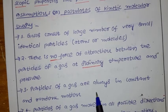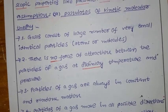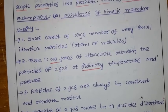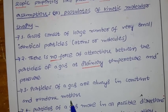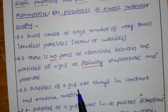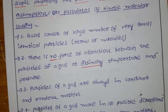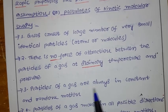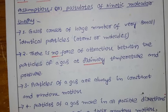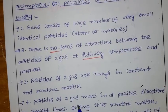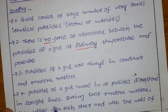The third assumption is: particles of a gas are always in constant and random motion. In a gas, the particles are always moving constantly and randomly — they are moving here and there.